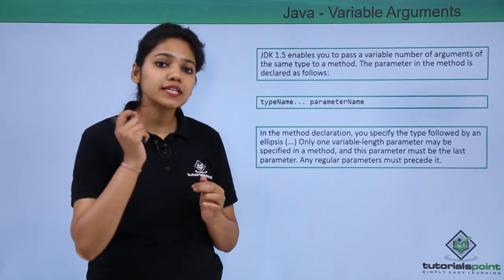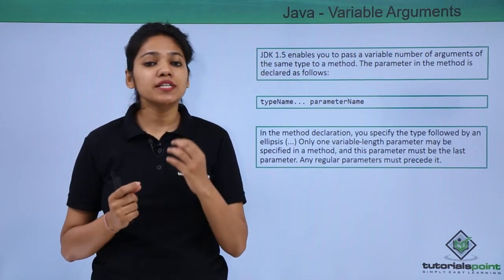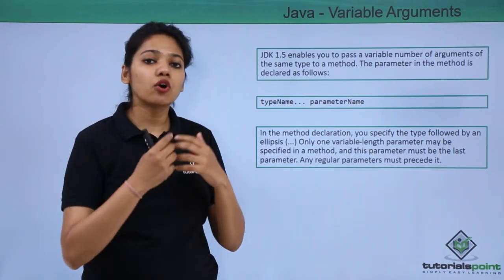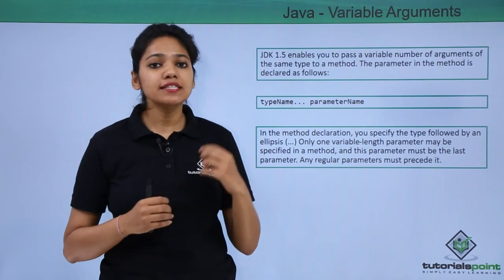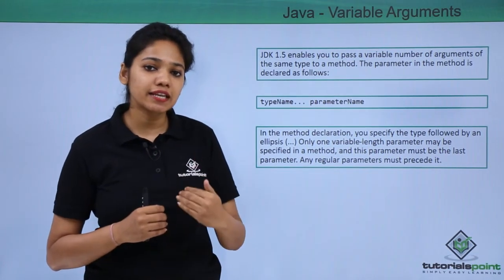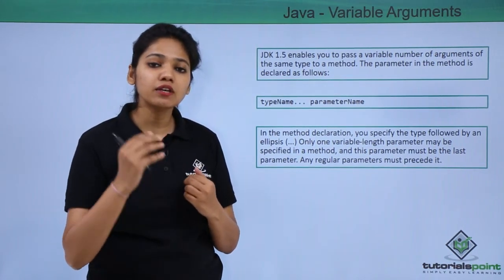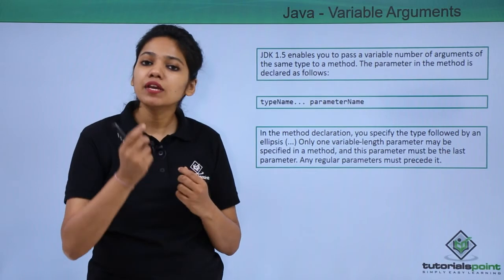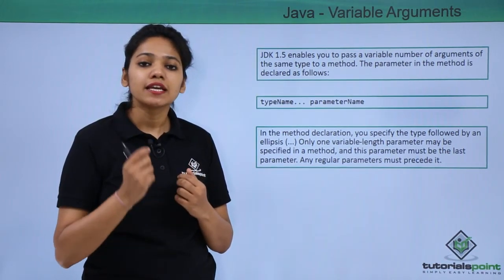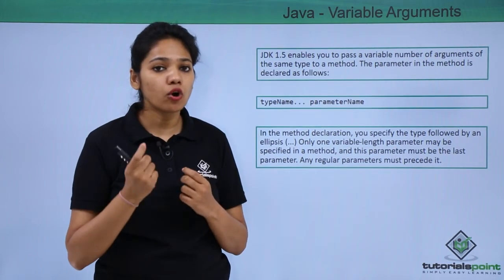What is the purpose of this variable argument? A variable argument allows you to take n number of argument values. You do not have to write the method again and again using the overloading concept. You can just write a single method which can accept zero or more number of arguments.